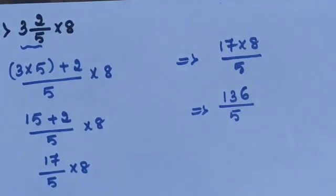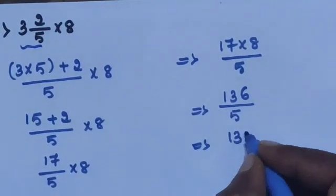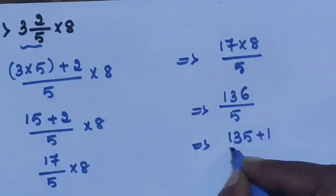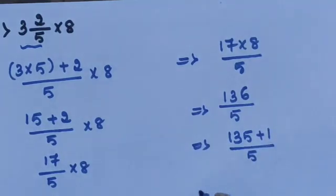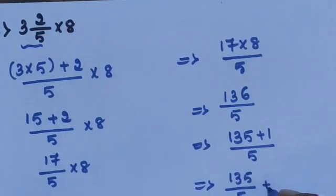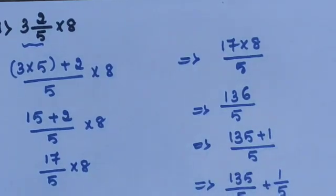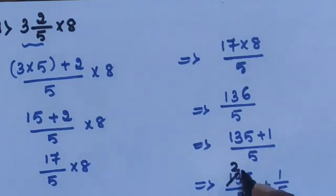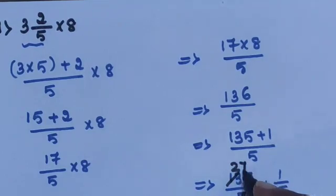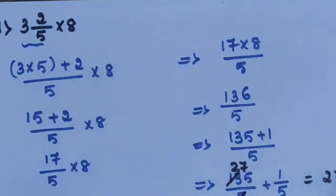Convert 136/5 into a mixed fraction. 136 = 135 + 1, so 135/5 + 1/5. Since 135 ÷ 5 = 27, the final answer is 27¹/₅.